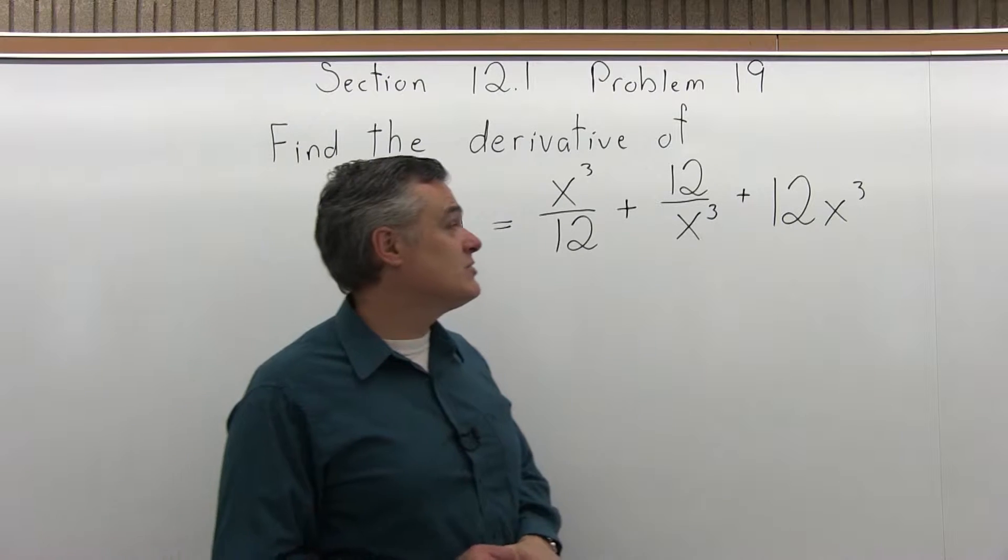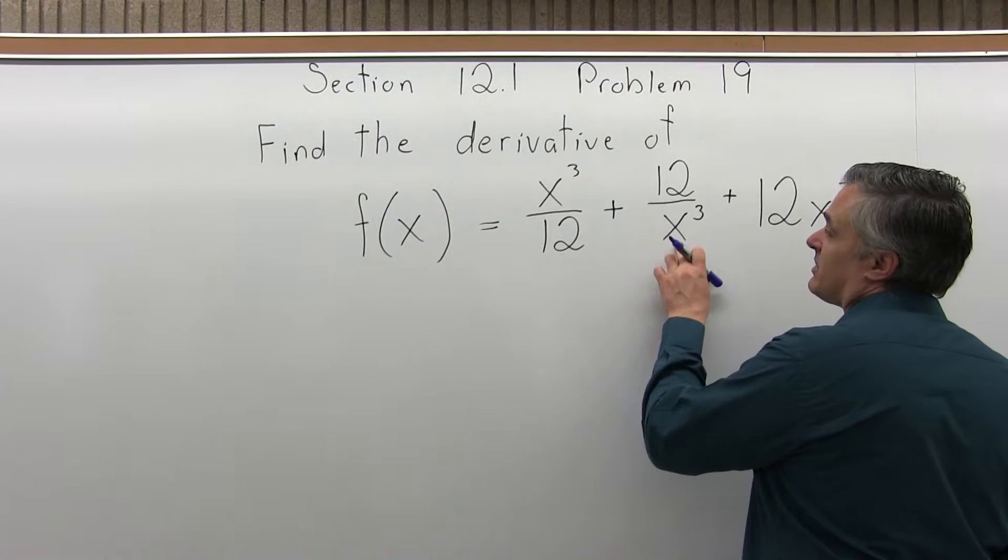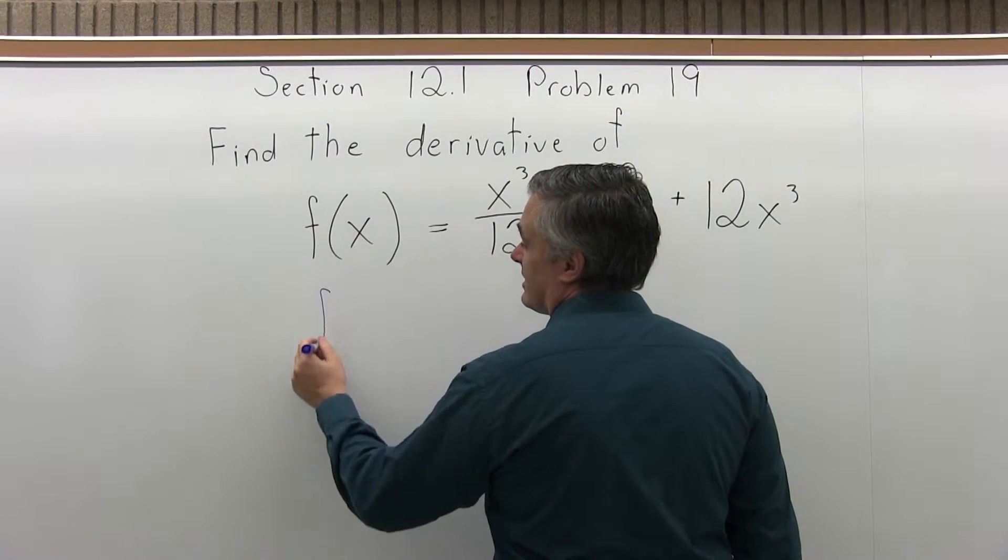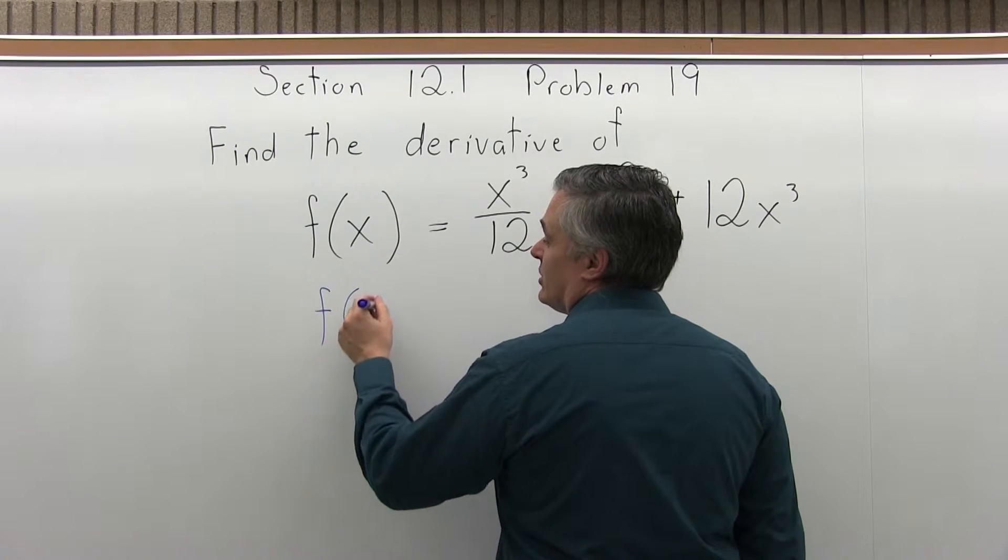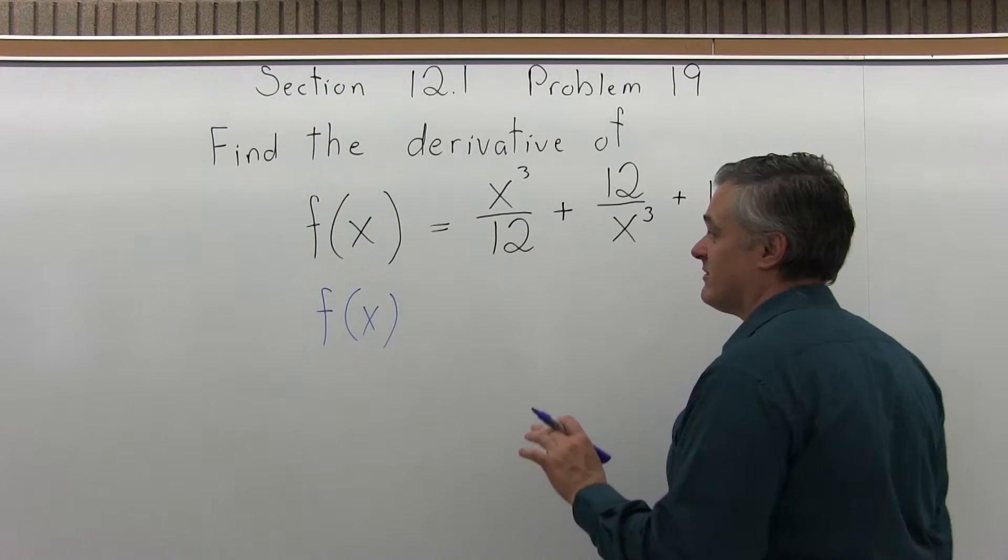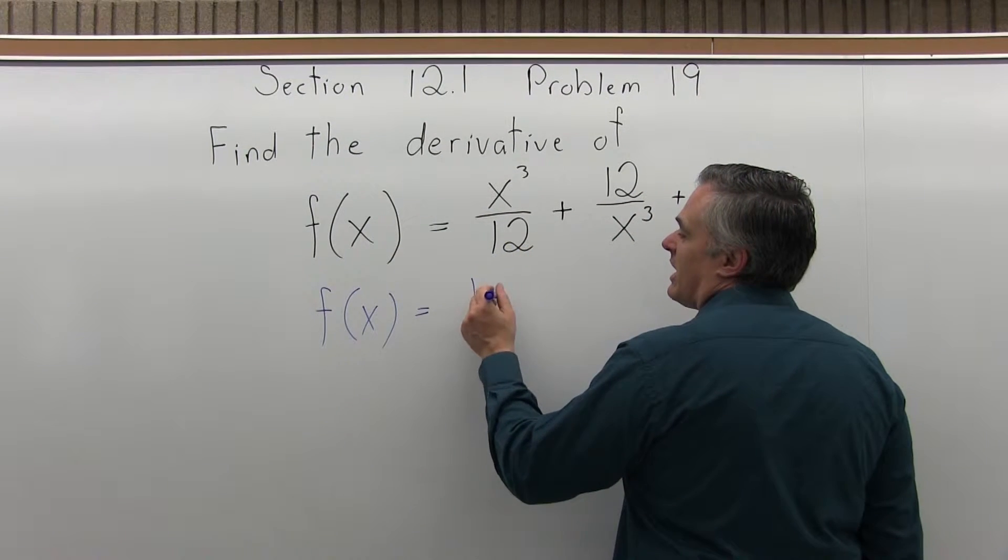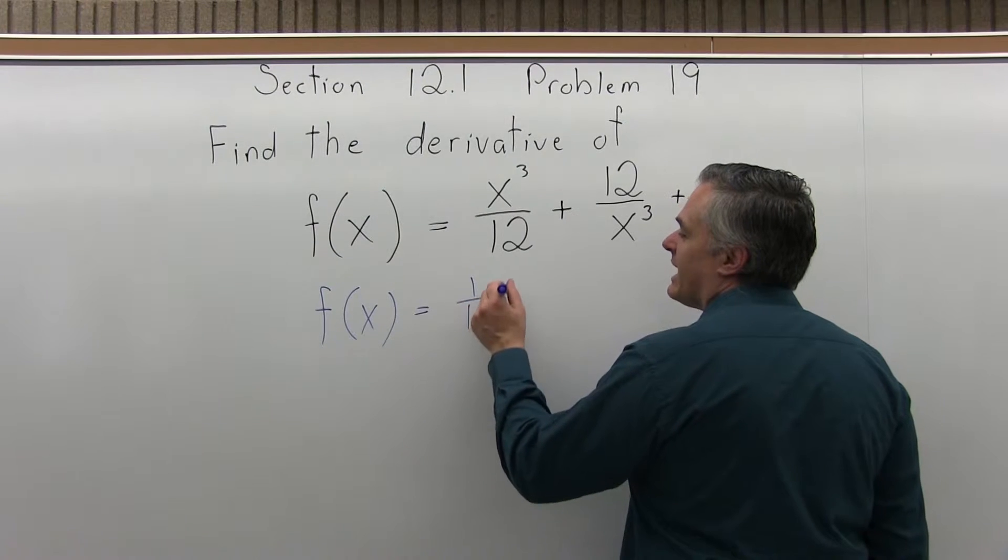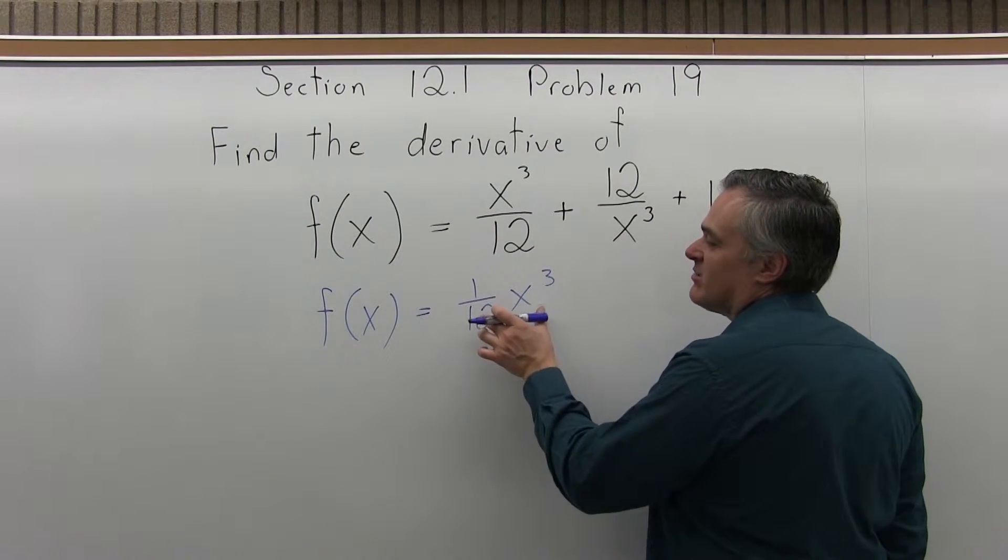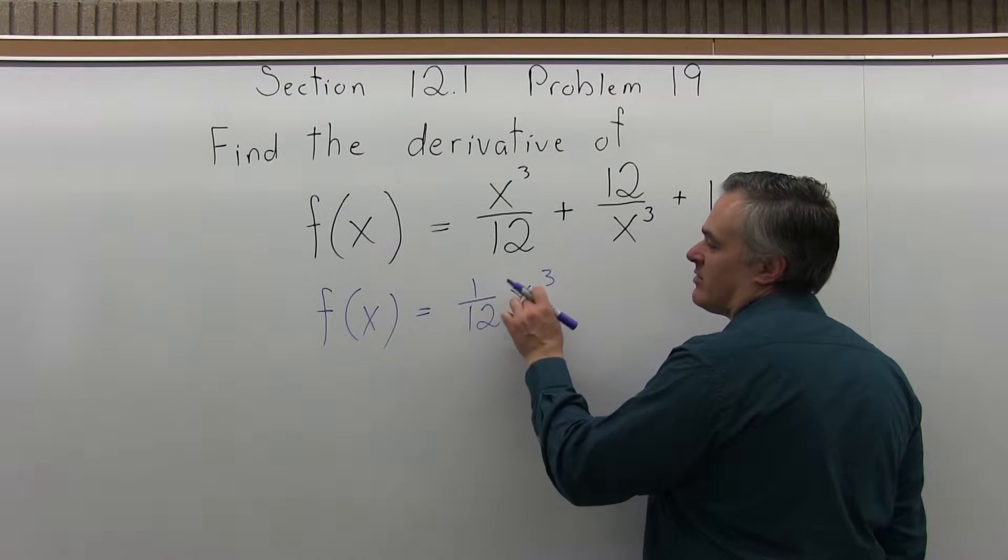So let's do the derivative of this. Before I can take the derivative, I want to rewrite this, especially the part with the x³ in the denominator. As I start the problem off, notice I'm still at f(x), not f prime. This is still f(x), I'm just rewriting the function a little bit. This x³/12 can be written as (1/12)x³. It's the same thing, but now it fits the form of there's a number in front, the variable, and an exponent.